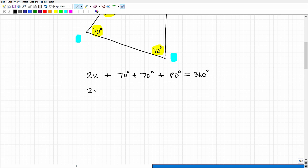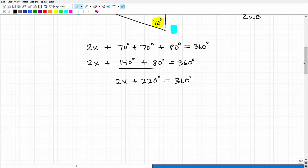But let's proceed and solve this. So I'm going to have 2x, 70 and 70 is going to be 140 degrees plus 80 degrees equals 360 degrees. So 140 plus 80 is going to give me what? That's going to be 220 degrees. So I have 2x plus 220 degrees is equal to 360 degrees.